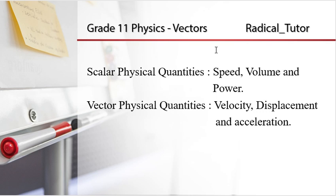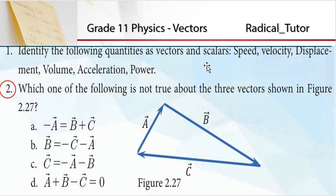Question number 2: Which one of the following is not true about the three vectors shown in Figure 2.27? In the diagram you can see three vectors A, B, and C forming a triangle.